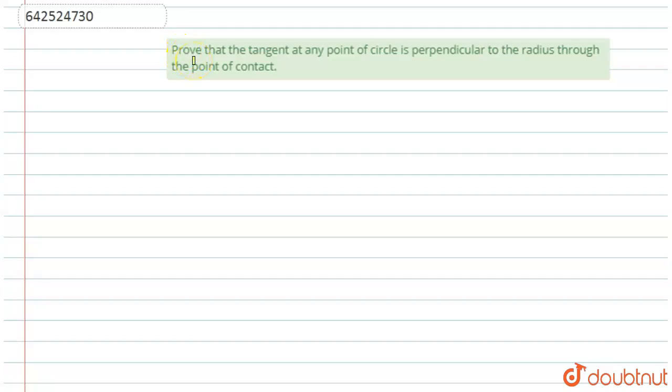Hello student, let's start with the solution. Here we have given to prove that the tangent at any point of circle is perpendicular to the radius through the point of contact. So first of all, to solve this particular question,